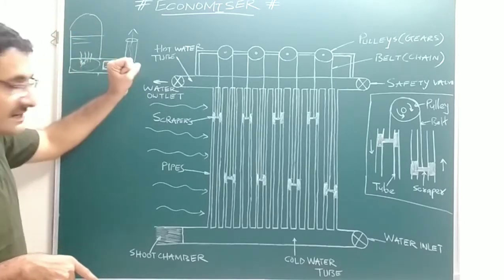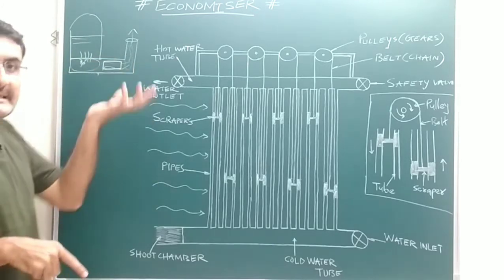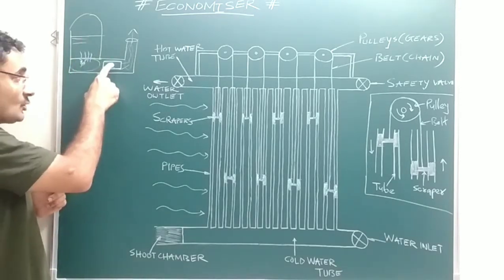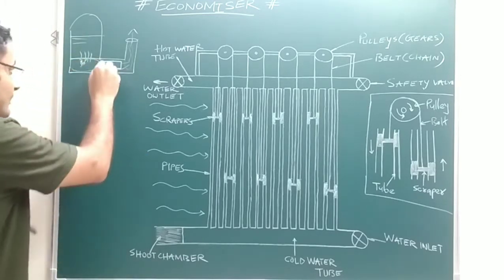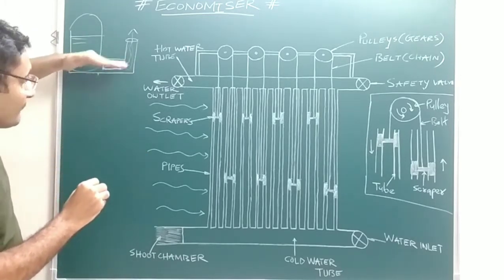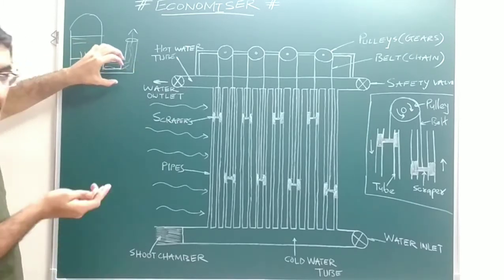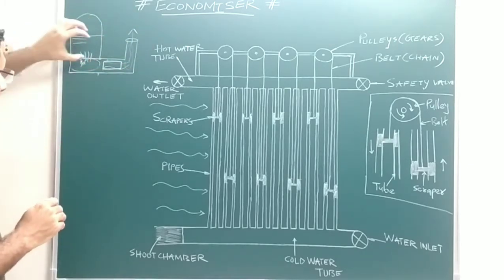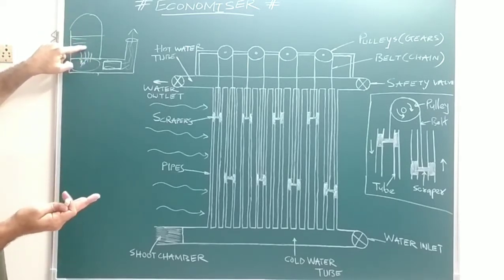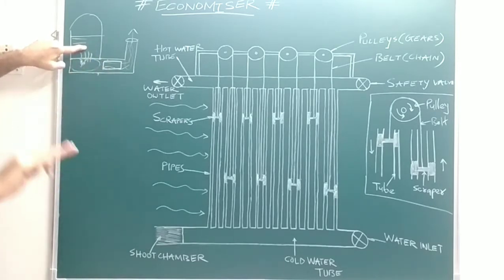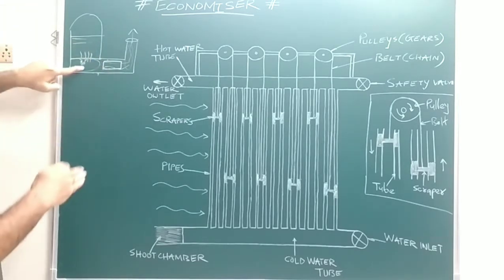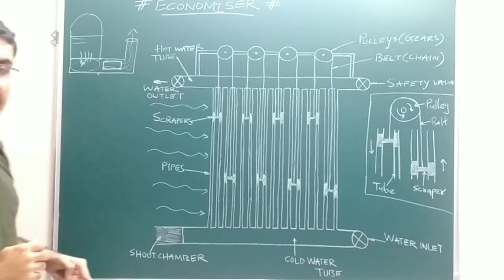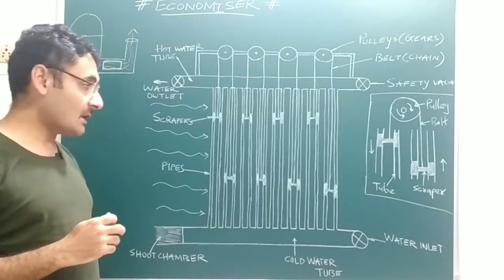The economizer uses the waste heat of the hot fuel gases and increases the temperature of the water inside it, then supplies that high-temperature water to the boiler. This means that if you want to convert that high-temperature water into steam, less amount of fuel is required. So we can save fuel with the help of the economizer, which increases the efficiency of the boiler.